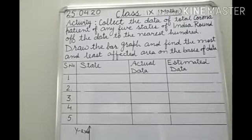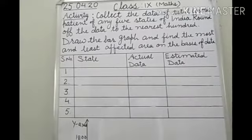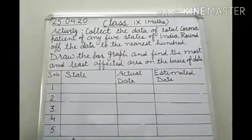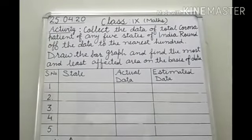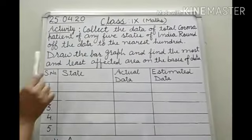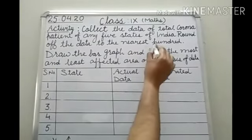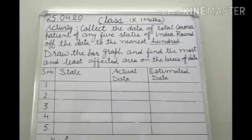Students, activity is just see the board. Here we have to collect the data of total Corona patient of any 5 states of India. Any 5 states you can take randomly. Round off the data to the nearest hundred. Means what data you got, you have to round off this data to the nearest hundred.